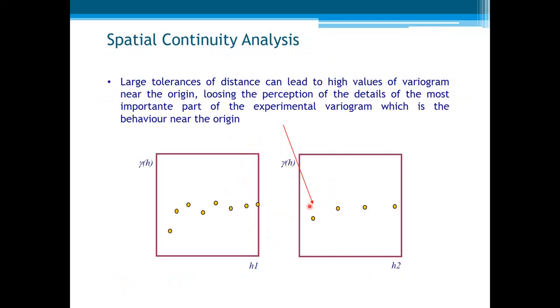Another remark. Large tolerances of distance can lead to high values of variograms near the origin, losing the perception of those details. The most important part of the variograms, which is the behaviour near the origin. So when we enlarge the lag, we lose those details. And this is the most important part of the variograms for the purpose of the spatial inference models that we'll see afterwards.